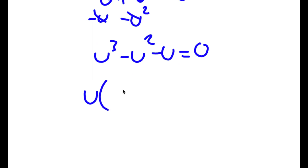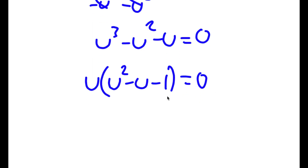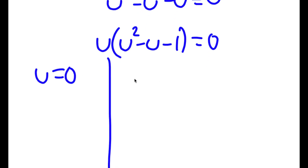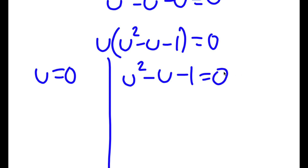Now I'm going to factor out u. So I get u times u squared minus u minus 1 is equal to 0. And this gives me two equations: u is equal to 0, and u squared minus u minus 1 is equal to 0.